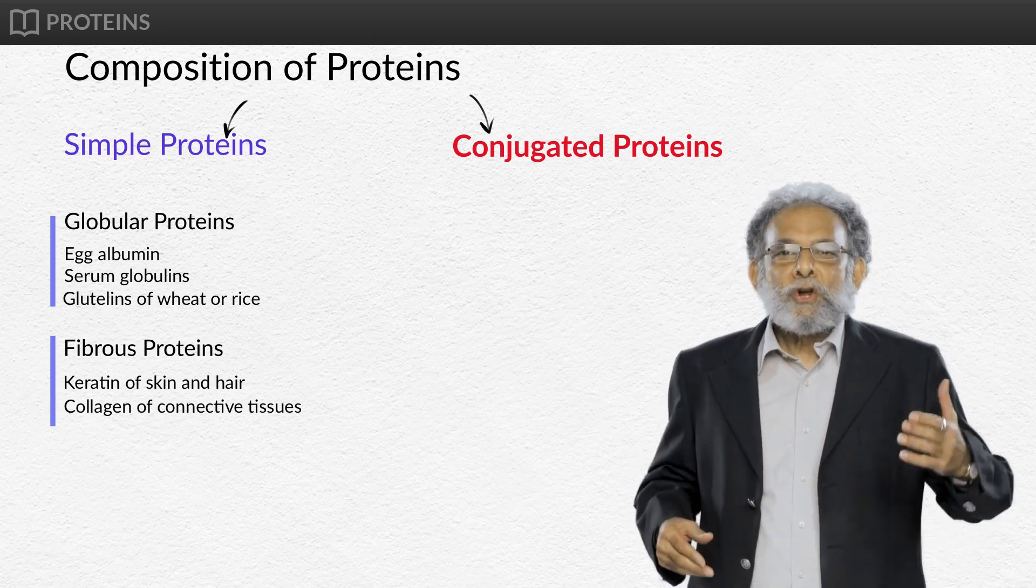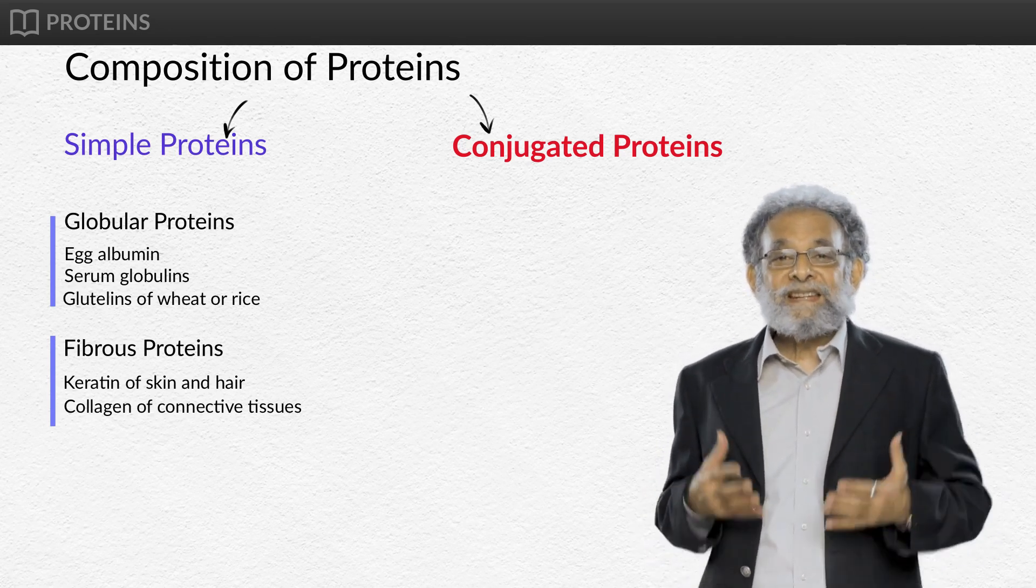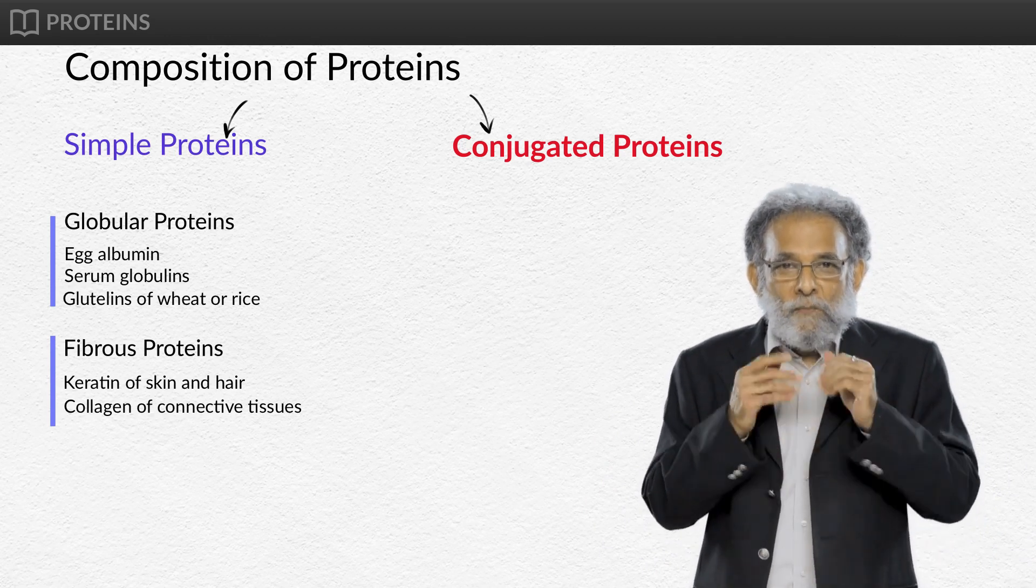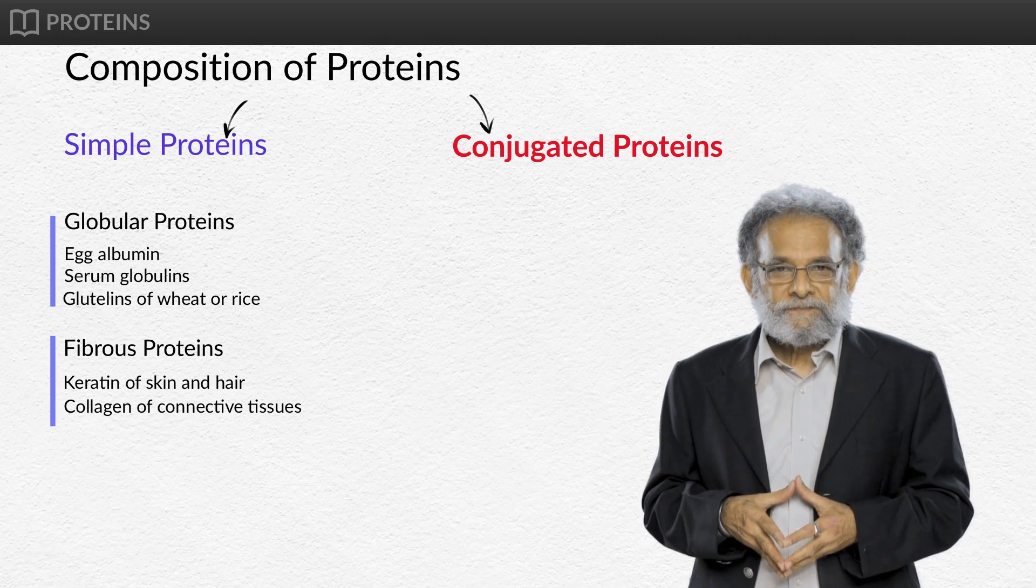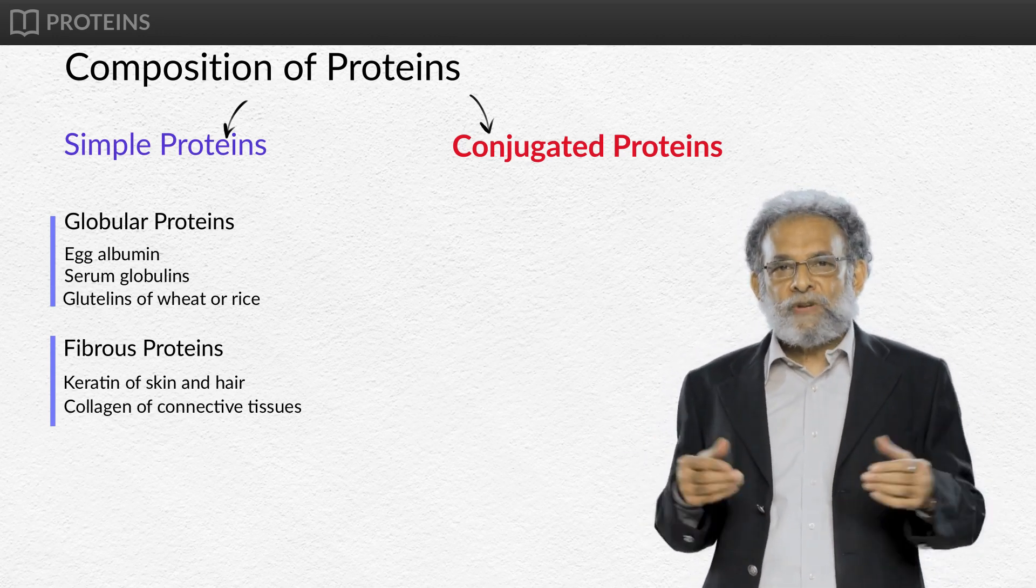Secondly, conjugated proteins are composed of a simple protein combined with a non-protein part. The non-protein part is called the prosthetic group. Now let us move on to the types of conjugated proteins.